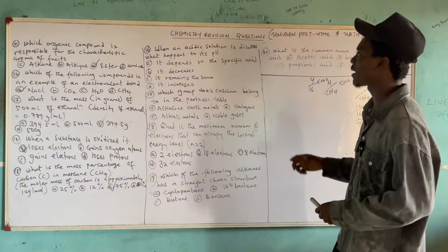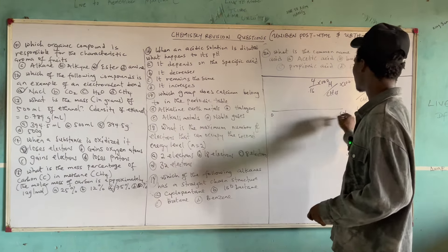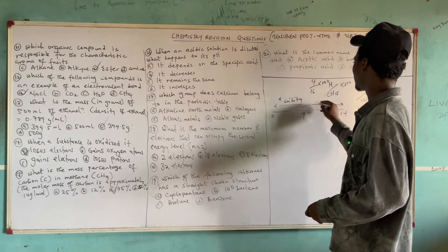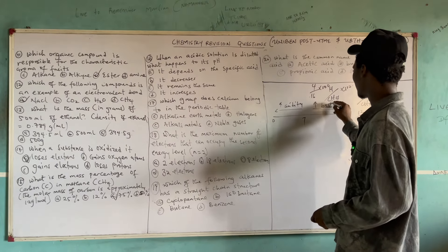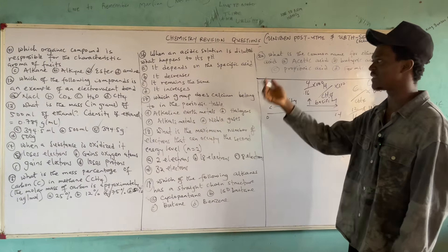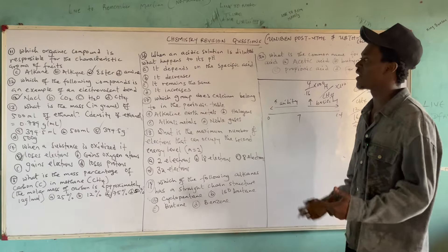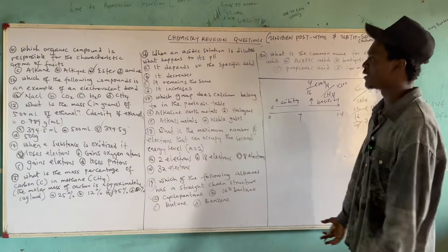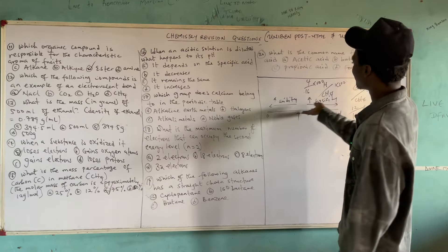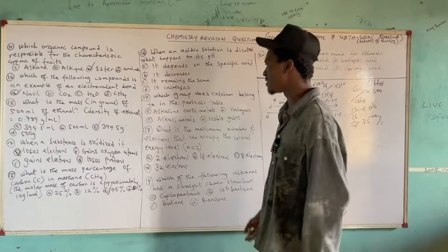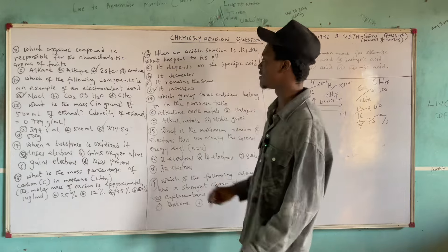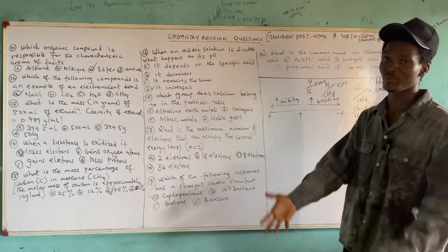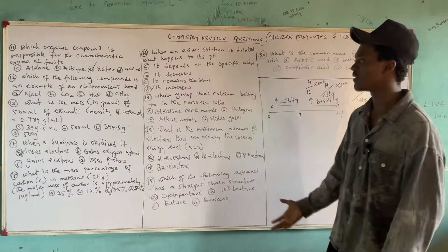Question 16: When an acidic solution is diluted, what happens to its pH? The pH scale ranges from 0 to 14, with 7 being neutral. Lower pH means higher acidity; higher pH means higher basicity. When you add water to an acidic solution, you dilute it, which increases the pH toward neutral or basic. So the correct answer is D — it increases the pH value.